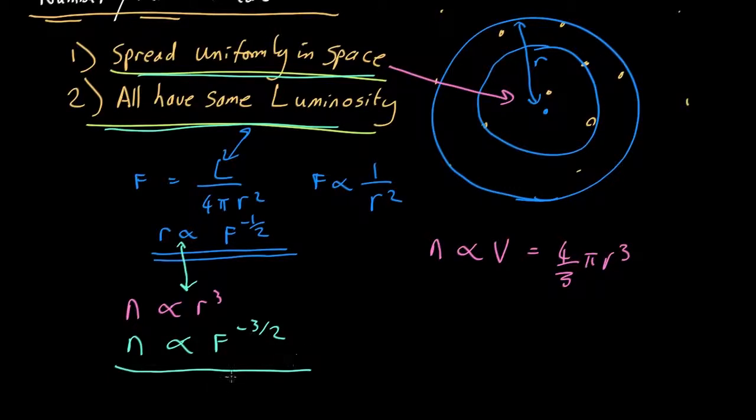Now, as we saw in the plot, that's actually not what we get. We have number versus flux, and here's the minus 3 halves on the log plot, and here's what we actually observed. So it's not fitting that curve, so one or other of these two assumptions must be invalid.